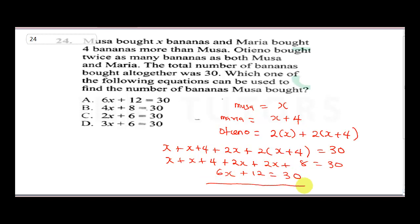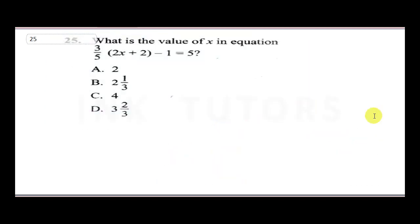The equation to find the number of bananas Musa bought is 6x plus 12 equals 30, which is option A. That takes us to the next question — finding the value of x in a given equation.